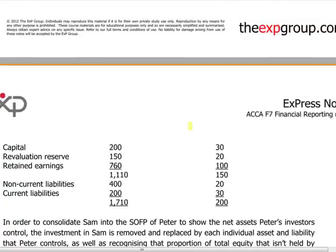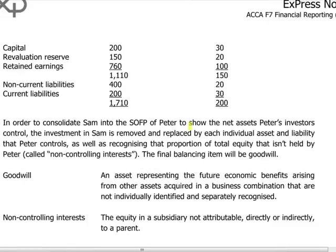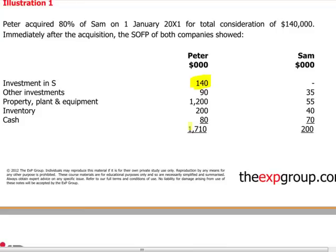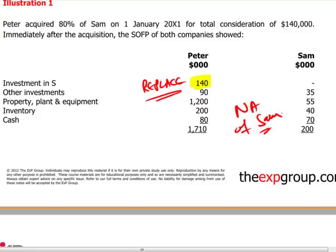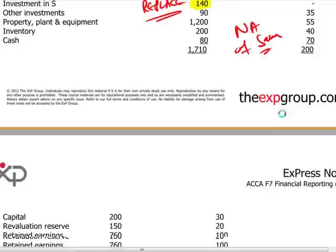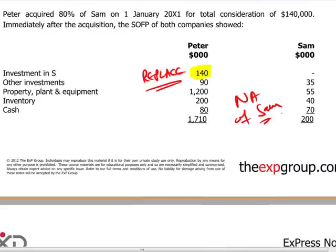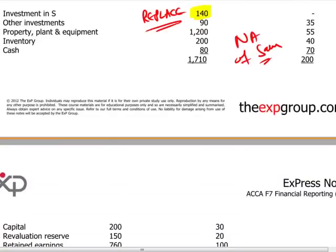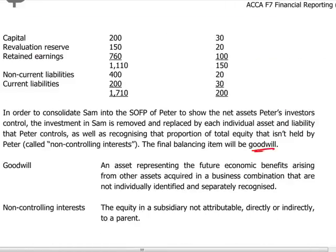To consolidate Sam into Peter's statement of financial position, we need to show the net assets to Peter's investors, since we do control them. We replace the cost of investment figure with all the net assets of Sam. Both the investment figure and the net assets at the acquisition date must be at fair value. If there is a difference between what we pay to acquire the subsidiary and the fair value of its net assets, that difference is called goodwill.